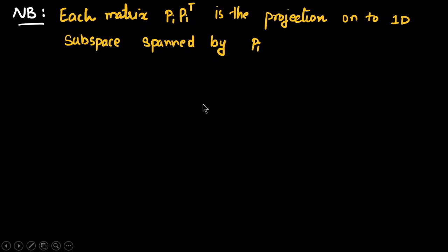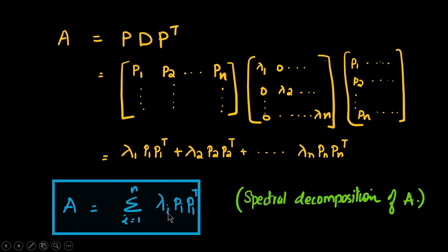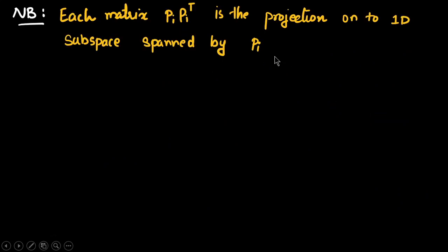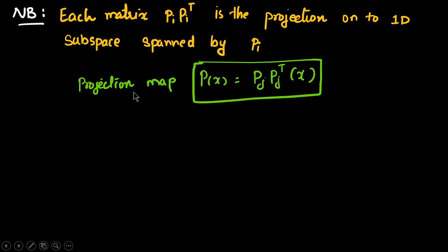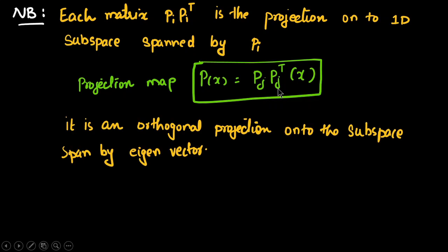In this spectral decomposition, each term Pi times Pi transpose is actually the projection from the n-dimensional space to a one-dimensional subspace. So the projection map is written as P(x) = Pj times Pj transpose times x. It is an orthogonal projection onto the subspace spanned by the eigenvector.